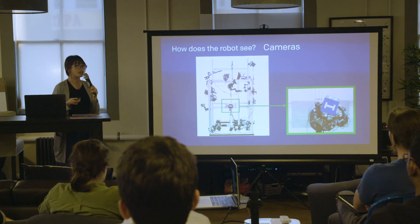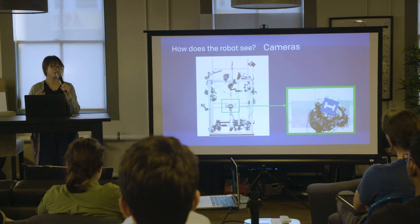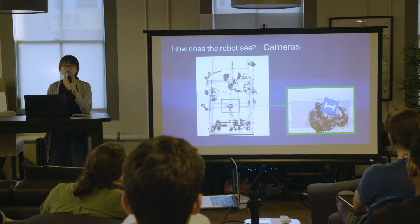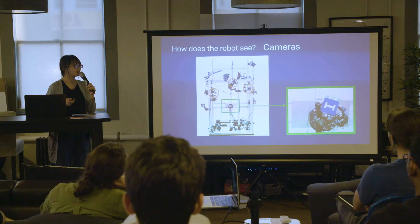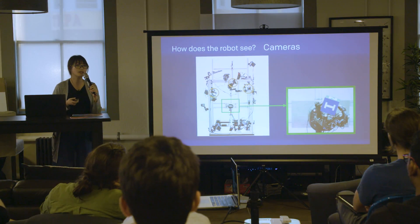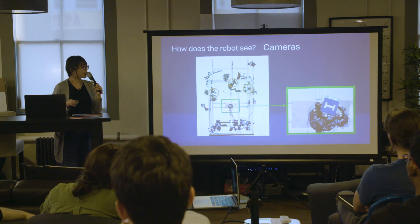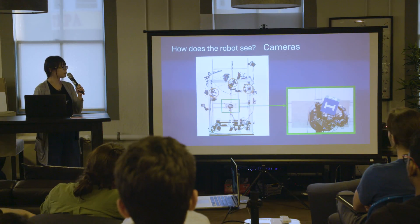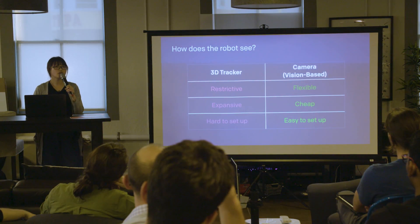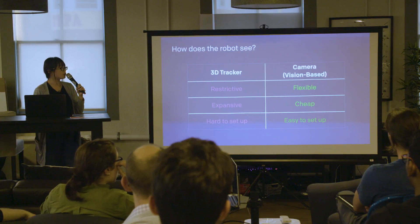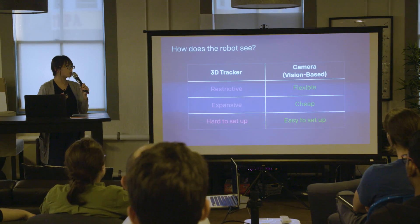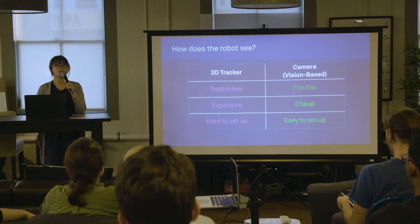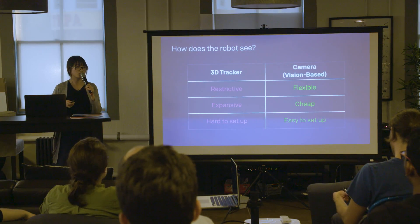Instead, we want a more biologically inspired solution: just use cameras. We set up three cameras on the cage, looking at the robot and the object, and from those images we try to infer the state of the object. A vision-based state estimator is more flexible, cheaper, easier to set up, and is really what we want to build.